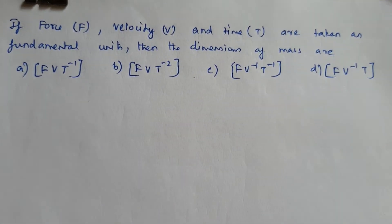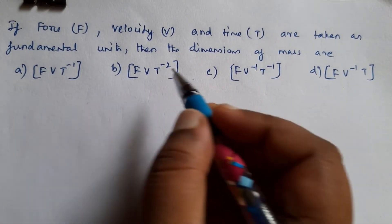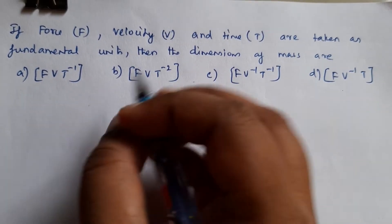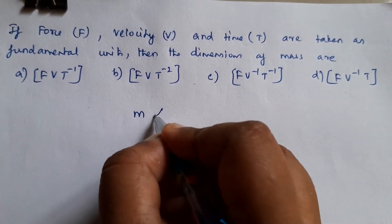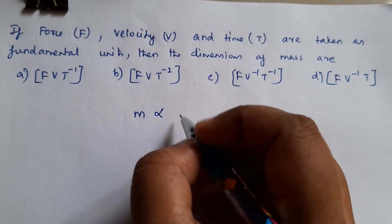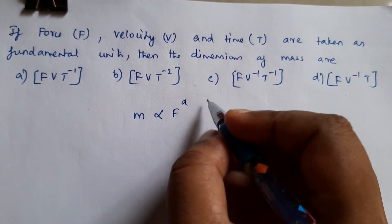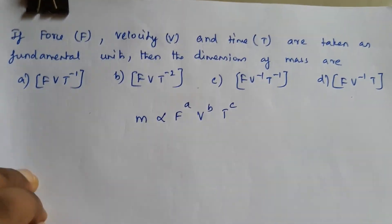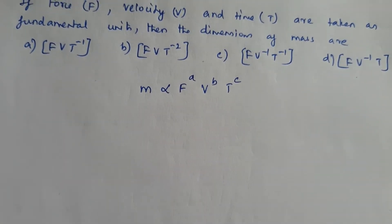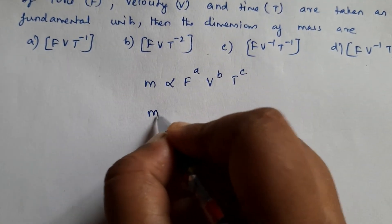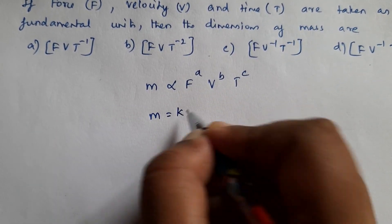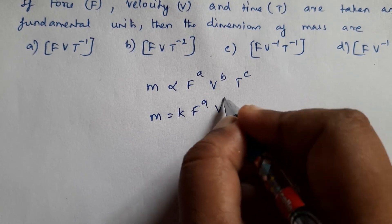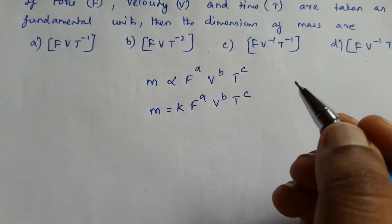Now here, force, velocity, and time are the fundamental units for mass. So mass is dependent upon force, so F raised to a, v raised to b, and t raised to c. The proportionality sign can be removed and we put a constant: m = k · F^a · v^b · t^c.